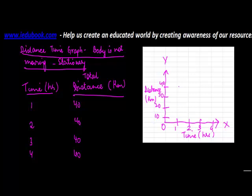At 1 hour, the total distance was 40 kilometers. At 2 hours, again the distance was 40 kilometers. At 3 hours, again 40. At 4 hours, again 40. So if you join these dots, it becomes a line which is parallel to the x-axis.